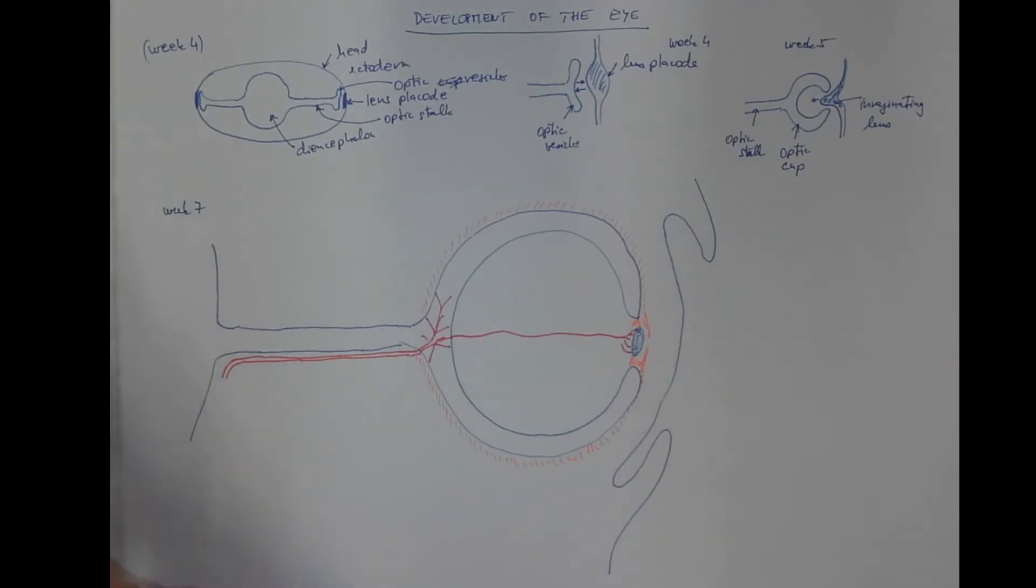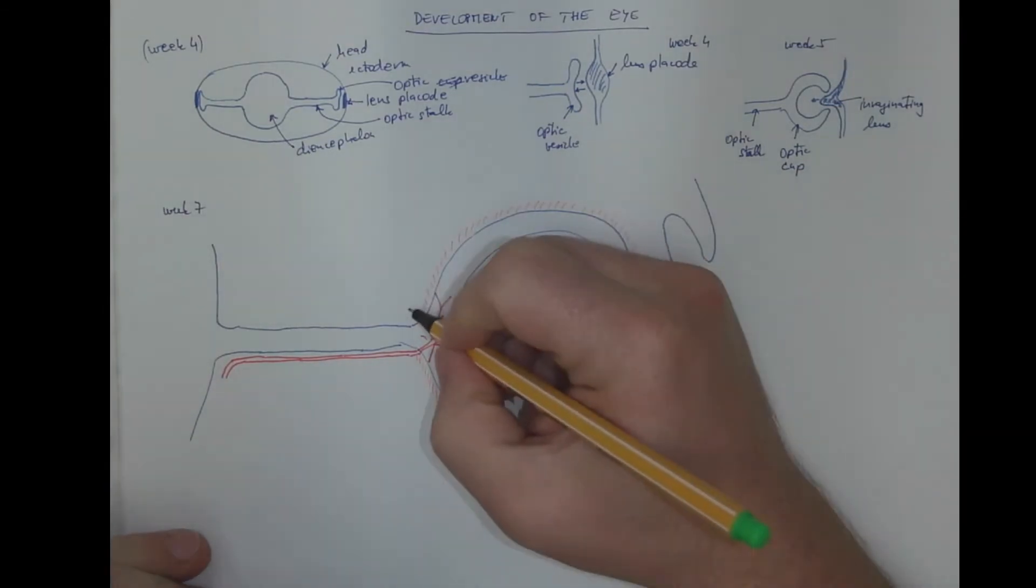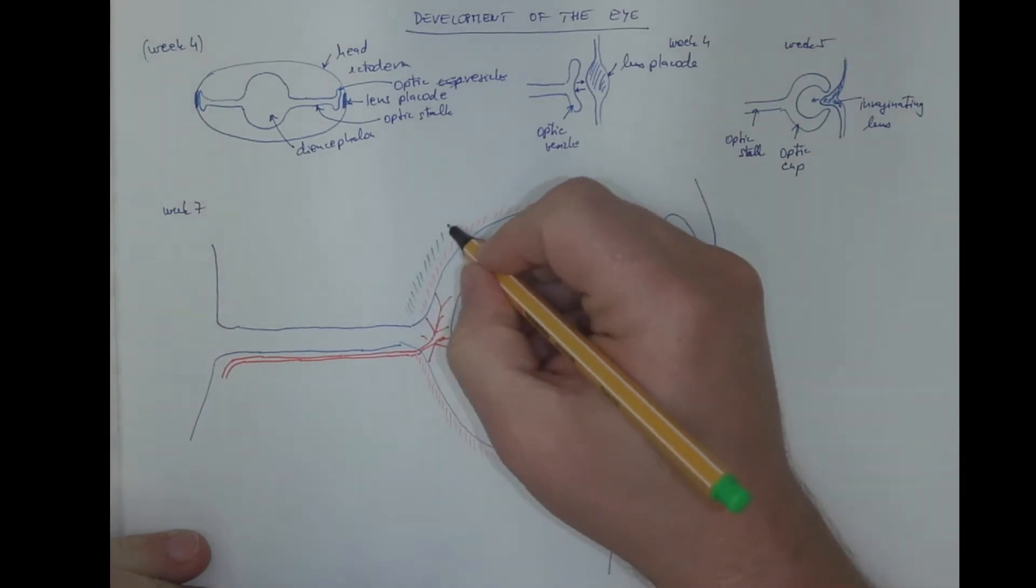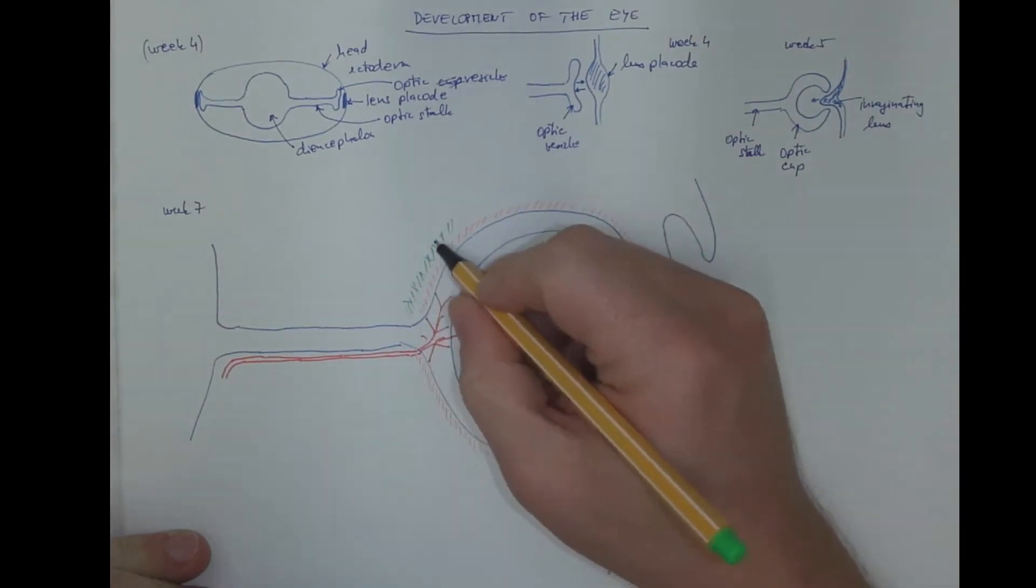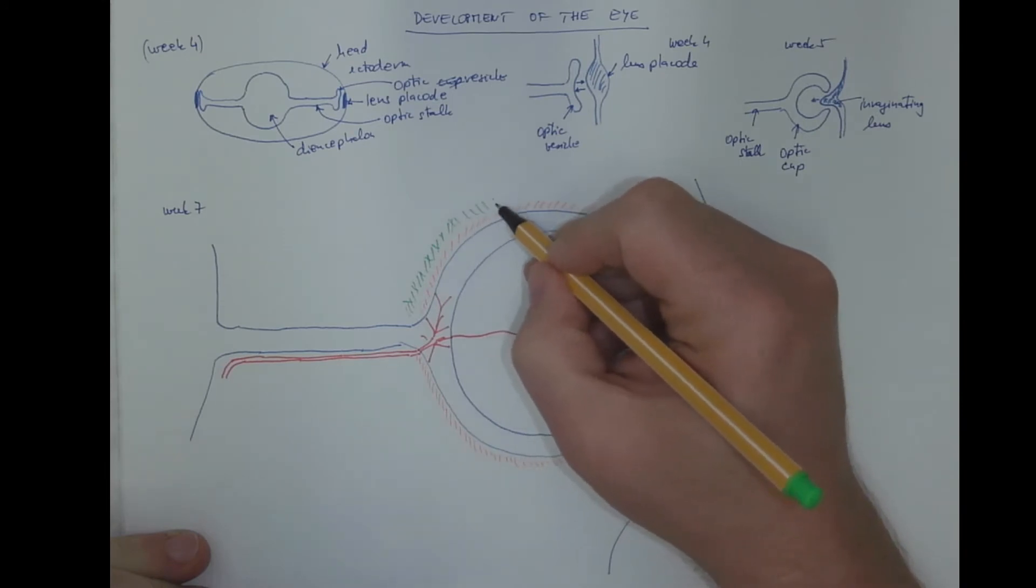And the outer is the fibrous layer, represented by the sclera. Both of these are from the mesenchyma.